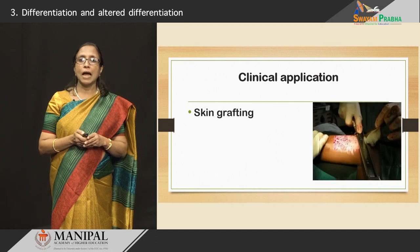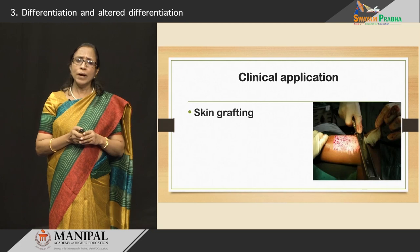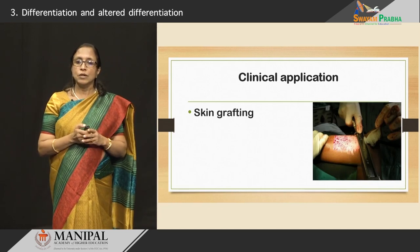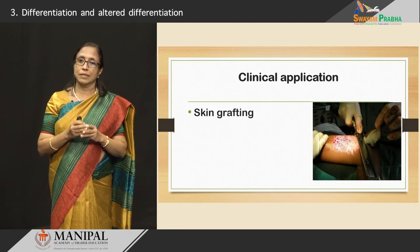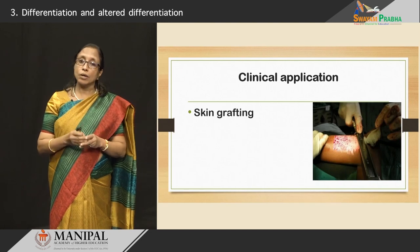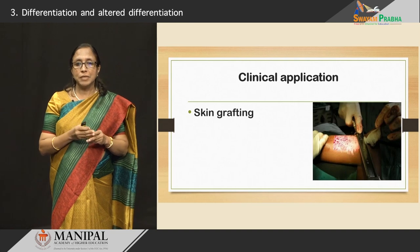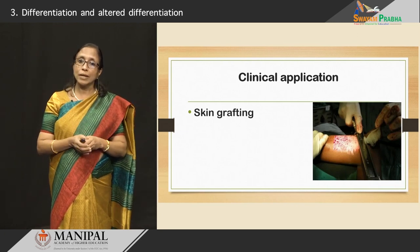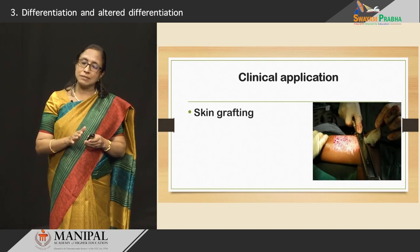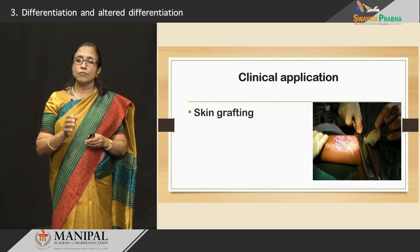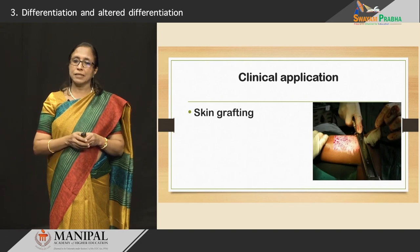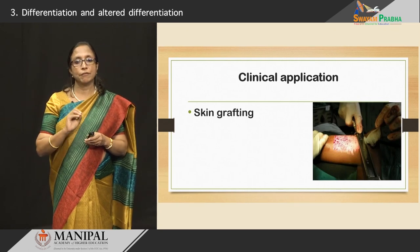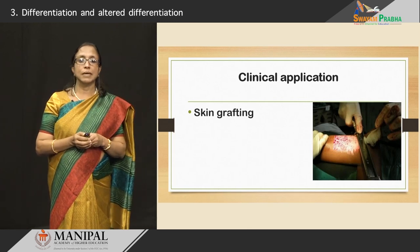A clinical application of labile cells is skin grafting. Skin is shaved off from one part of the body so it can be used to replace skin at a site where there is an ulcer that is not healing or a burn wound. That piece of skin is placed there and it grows at that new site. Similarly, from the site where the skin was removed, the skin gets totally replaced very fast. This is all because the skin cells are labile cells.